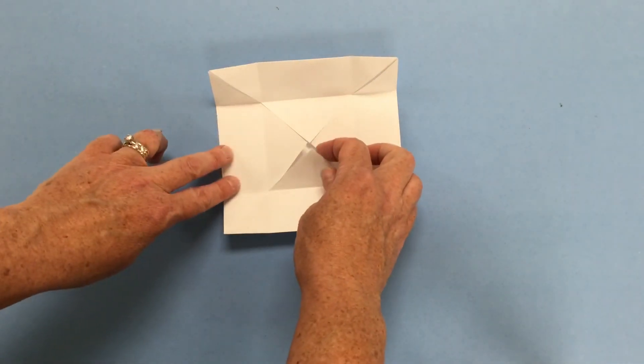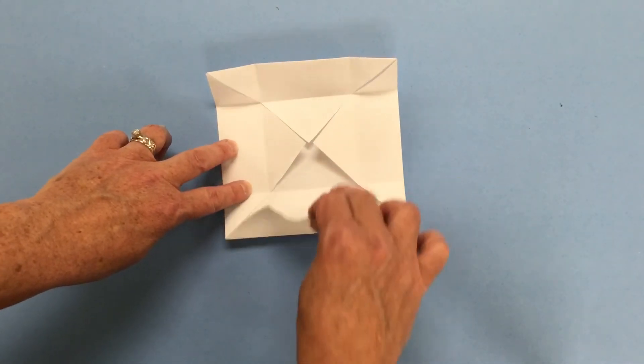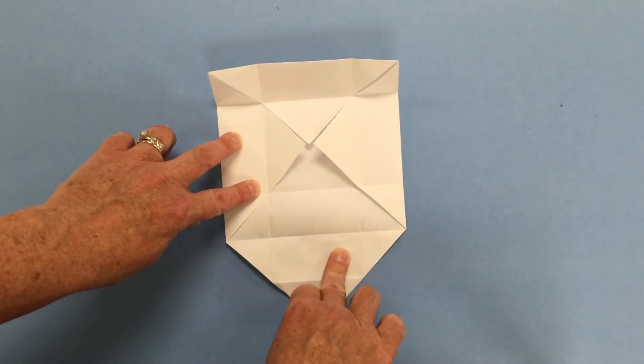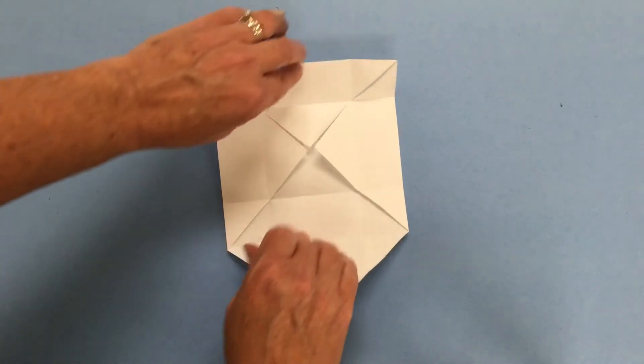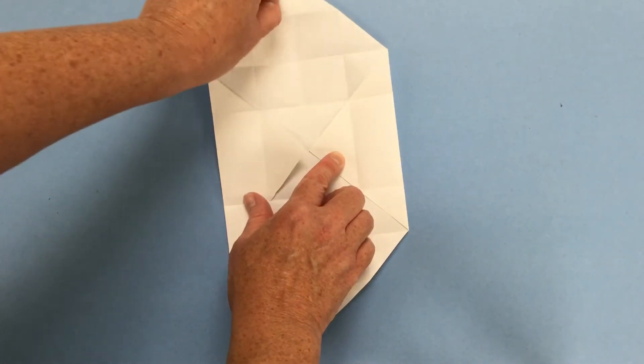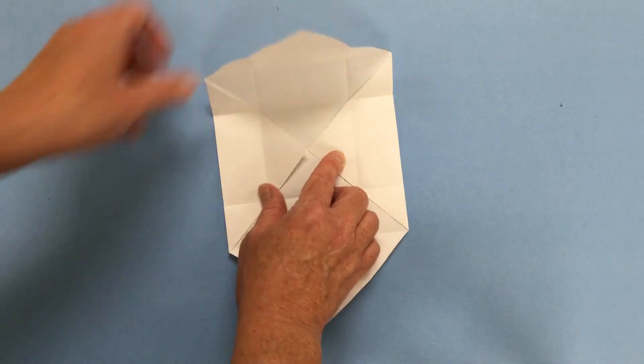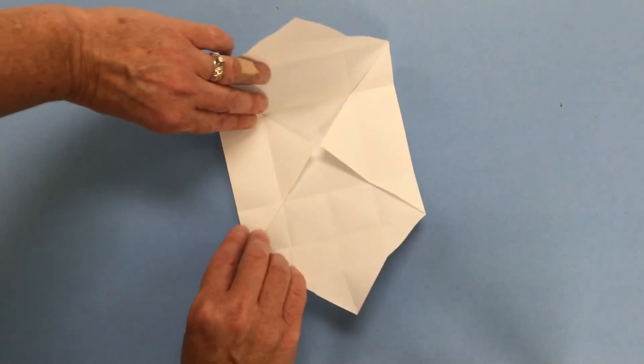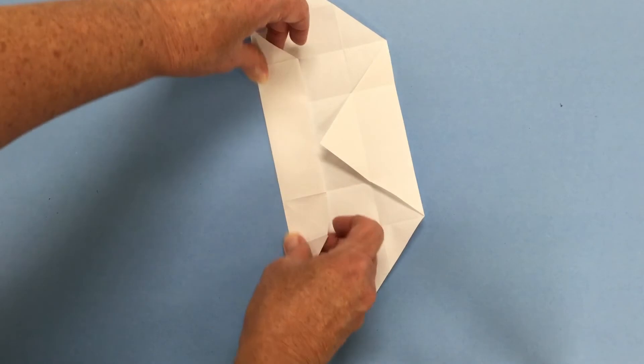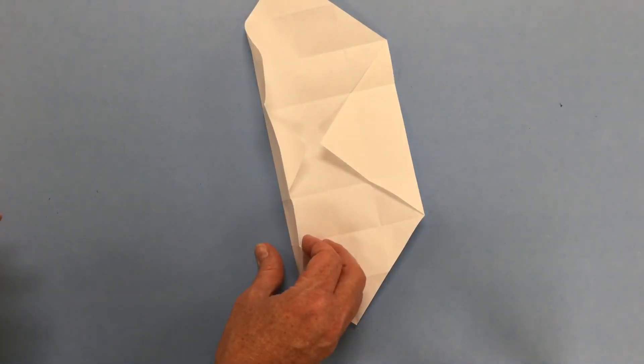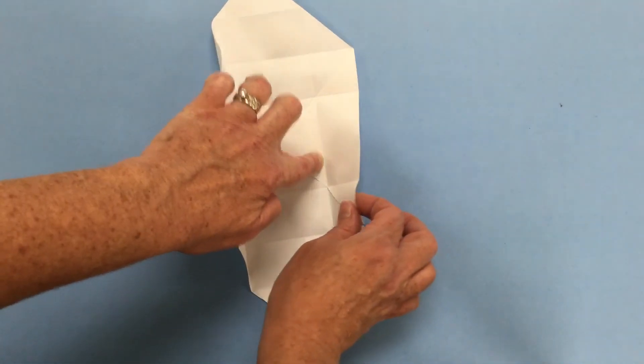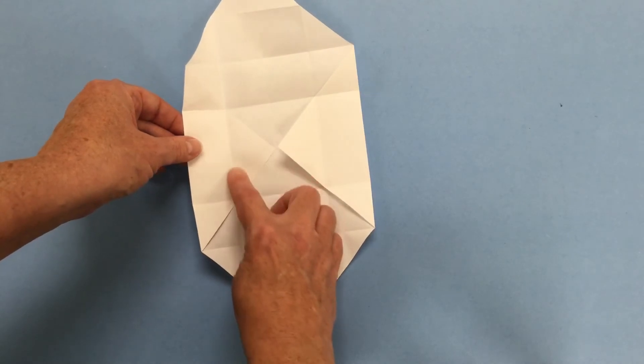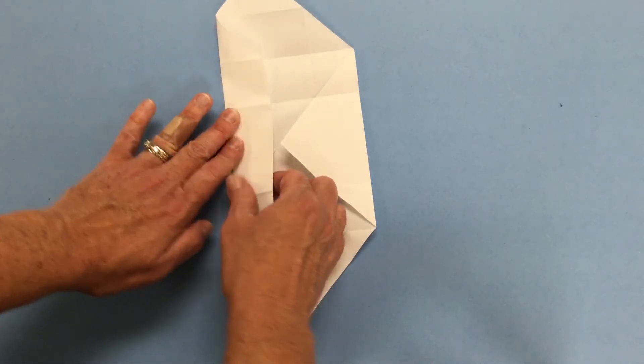Okay, now we have a whole lot of folds on here and these are going to be really useful in this next step. I'm going to have you take the triangle on the bottom and peel it back and take the triangle on the top and peel it back. Okay, then we're going to put this fold back in on the side.